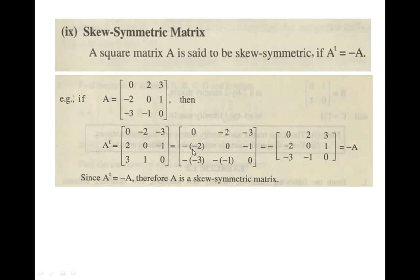After taking minus as a common factor from matrix A^T, the resulting matrix is equal to matrix A — which was originally given to us. So we can write A^T = -A. Therefore, A is called a skew-symmetric matrix.